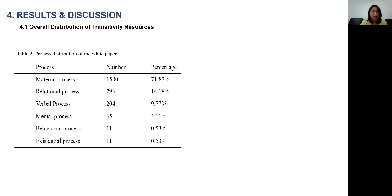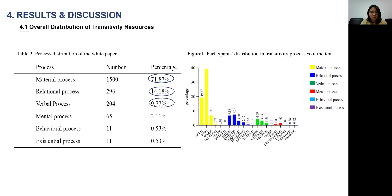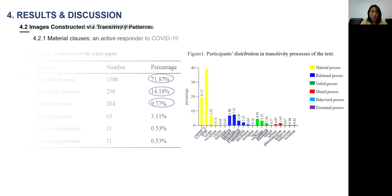Let's look at the results. The overall distribution of transitivity resources is shown in Table 2. As we can see, material process, relational process, and verbal process are the most frequently used processes. The participants involved in these processes are also a focus. We will focus on the actor in the material process, the carrier and identifier in the relational process, and the receiver in the verbal processes.